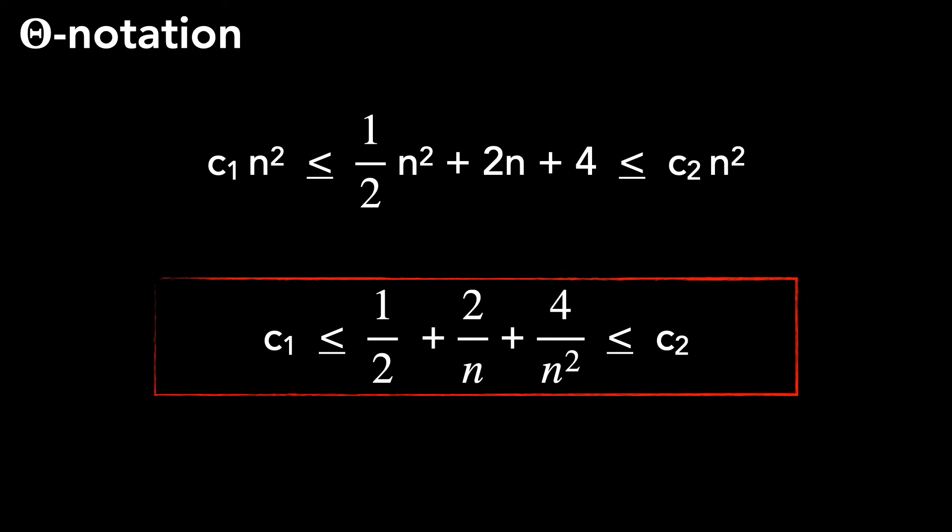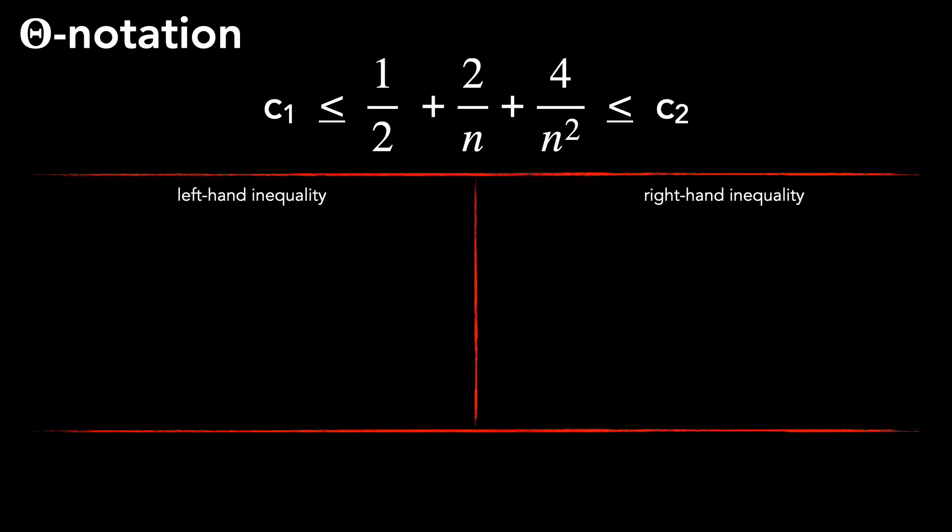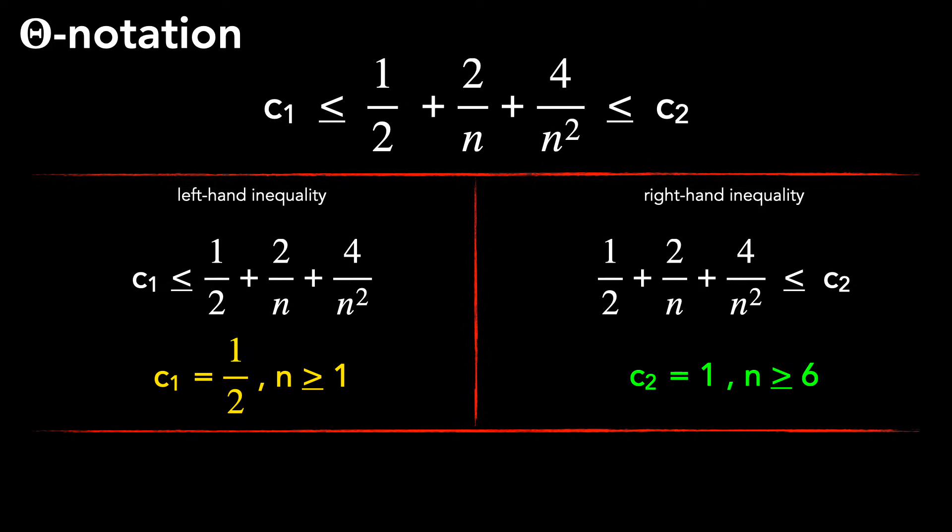Let's look at each side of this inequality individually. Starting with the left hand side, we know that when c1 is 1/2, the inequality holds true for all values of n ≥ 1. On the right hand side, when c2 is 1, the inequality holds true for all values of n ≥ 6. Please pause the video here if you want to review that math.